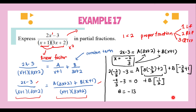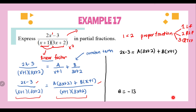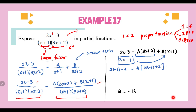We already have the value of B. Next, our aim is to find the value of A. To find A, we substitute x equals negative 1, because this makes the B term equal to zero. Substituting negative 1 on both sides: the left-hand side gives negative 5, and the right-hand side gives A(negative 3 plus 2) plus 0, which equals negative A. Solving, we find A equals 5.